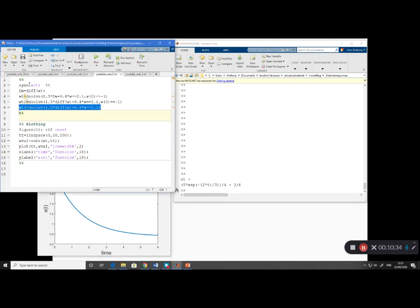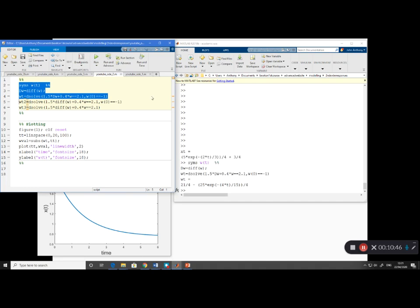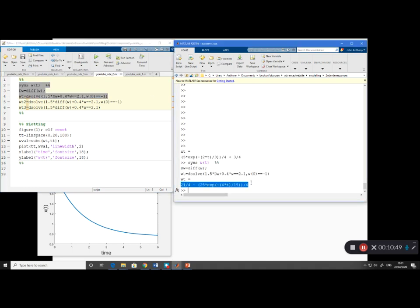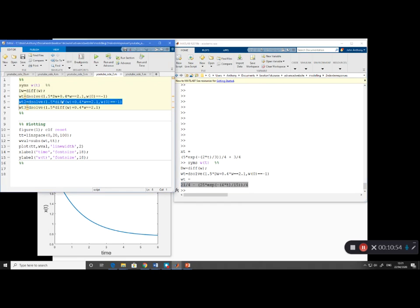Here, this example was to show that I can use different variable names. So here you'll see I've used syms wt and dw equals diff w. And so if I run the first three of those, okay, you'll see there's my solution for w of t. Now, line 5, if you look at that, you'll see was to demonstrate that you can use diff w in the dsolve statement. And instead of dw, if you want. So if I run line 5, you'll see you get an identical solution to the one above.